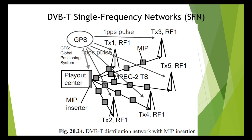At the multiplex site there is a so-called MIP inserter, which inserts special transport stream packets into each mega frame. This is why the packet is called a Mega Frame Initializing Packet — MIP. The MIP has a special PID of hexadecimal 15, so that it can be identified. It contains time reference and control information for the DVB-T modulators.